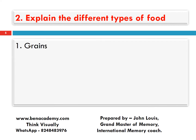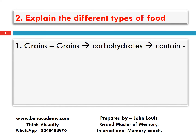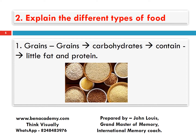How can we remember this? The keywords are: grains contain more carbohydrates and then contain little fat and protein. From the keywords we should be able to write the entire sentence. Grains contain three different types of nutrients — carbohydrates, proteins, and fats — but carbohydrate is in large quantity whereas fat and proteins are in small quantity.